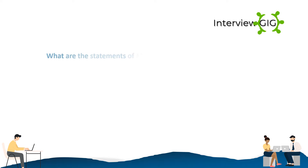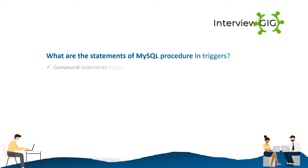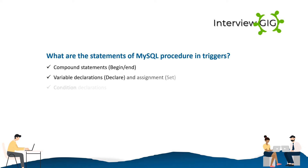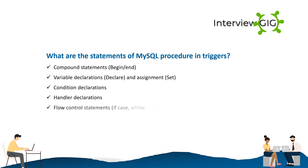What are the statements of MySQL procedures and triggers? Compound statements: BEGIN, END. Variable declarations: DECLARE, and assignment: SET. Condition declarations. Handler declarations. Flow control statements: IF, CASE, WHILE, LOOP, REPEAT, LEAVE, ITERATE.